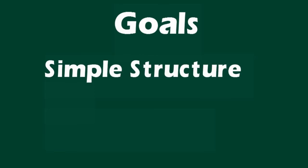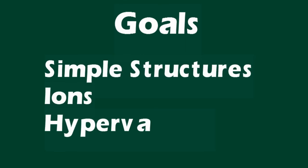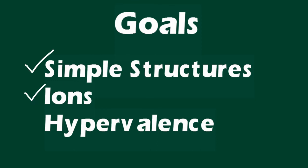We have now covered how to draw simple Lewis structures. You should now be able to calculate the total number of valence electrons in a molecule, draw basic structures, and be able to use hypervalence where appropriate.